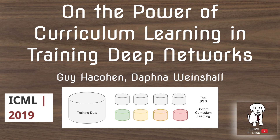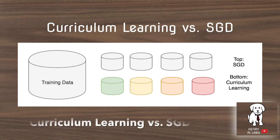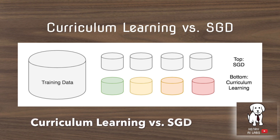This video presents a study on curriculum learning and training deep neural networks. This research paper was accepted into the ICML 2019 conference. We'll begin by explaining the difference between curriculum learning and standard stochastic gradient descent.